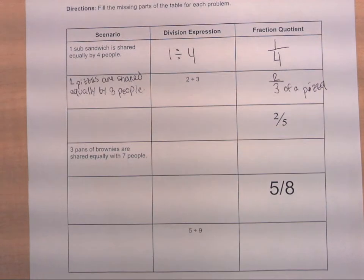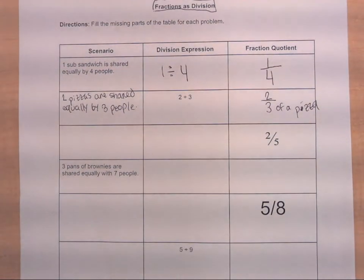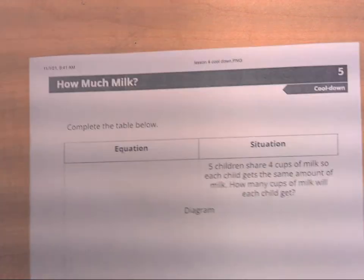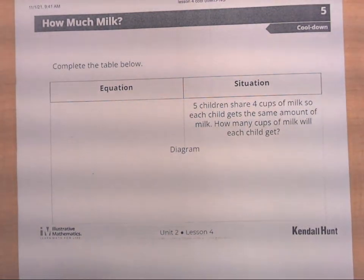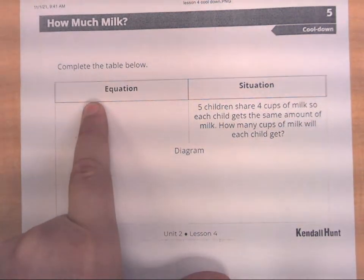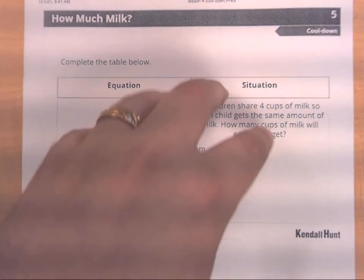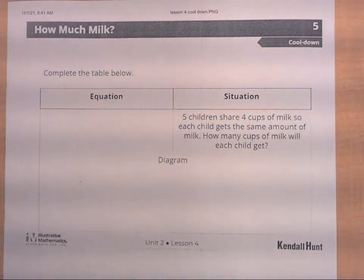Students worked on filling out the entire table by themselves for five to ten minutes in class, then spent about five additional minutes sharing their work with a partner, and then we went over it together as a class. Before students left, they completed a brief exit activity that gave me an idea of which students are starting to make the connection between division, a situation, and fractions, and where we are as a grade on the concept that fractions are division.